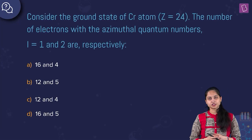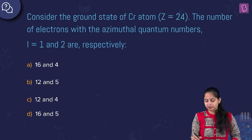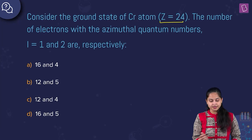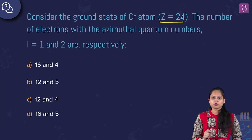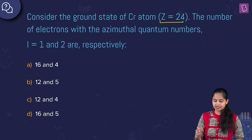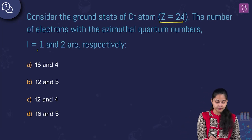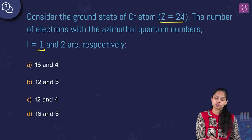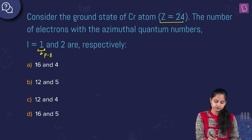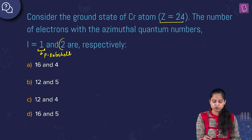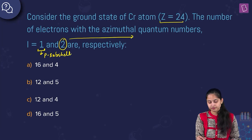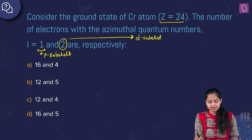Consider the ground state of chromium atom, wherein the atomic number Z equals 24. The number of electrons with azimuthal quantum numbers L equals 1 and 2 are respectively what? When L equals 1, it corresponds to the P subshell, and when L equals 2, it corresponds to the D subshell.